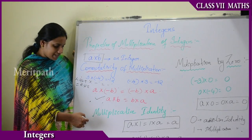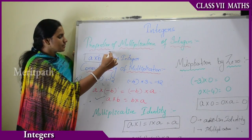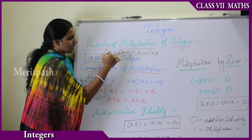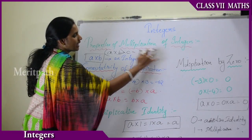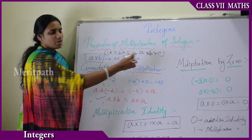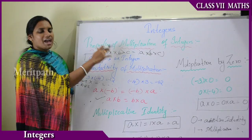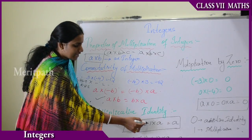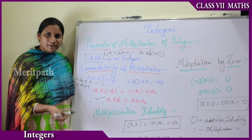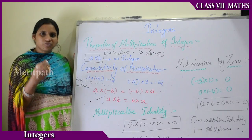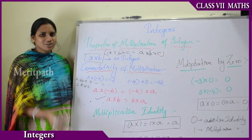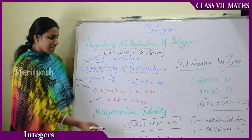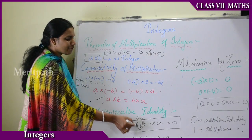Now let us see the associative property of multiplication: A into (B into C) equals (A into B) into C. This is the same concept as the associative property of addition. Now the multiplicative identity: A into 1 equals 1 into A equals A. That means if you multiply any number by 1 you get the same number — 3 into 1 is 3, 4 into 1 is 4, 100 into 1 is 100, 1000 into 1 is 1000. This is the multiplicative identity, where 1 acts as the identity element.